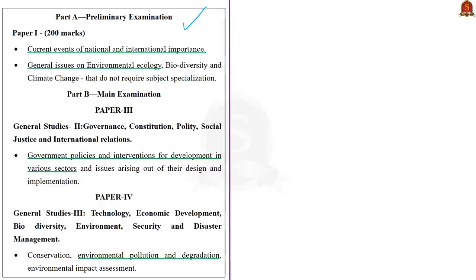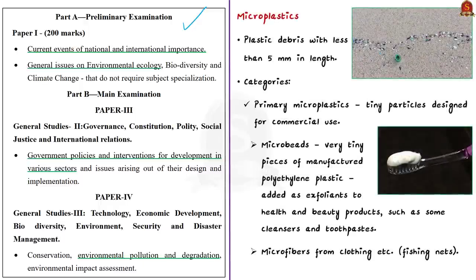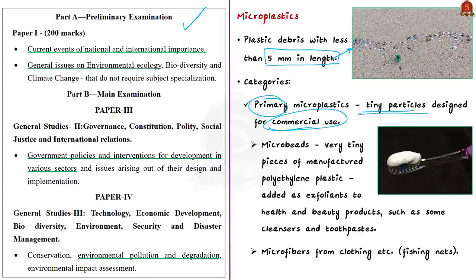Let us understand what microplastics are. Plastic is the most prevalent type of marine debris found in our oceans. Marine debris comes in all shapes and sizes, and when these pieces are less than five millimeters in length, they are called microplastics. There are two categories: primary microplastics and secondary microplastics. Primary microplastics are tiny particles designed for commercial use. Some are intentionally designed to be small, like microbeads.